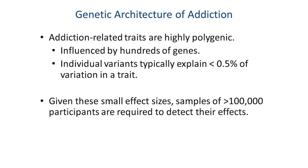As Dr. Messing pointed out, alcohol and other substance use disorders are highly complex in terms of their genetic architecture. There is no addiction gene — not even a small pool of 20 addiction genes. There are literally hundreds if not a thousand genes out of the twenty thousand that make up the human genome relevant to a complex trait like alcohol use disorder, and any one individual difference explains less than half a percent — typically 0.2 to 0.3% — of the variation in the trait.